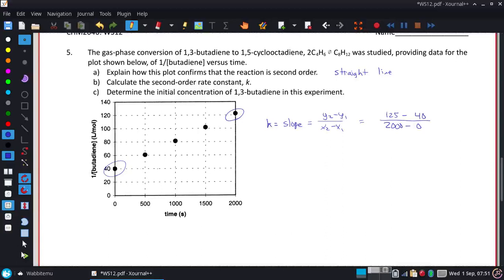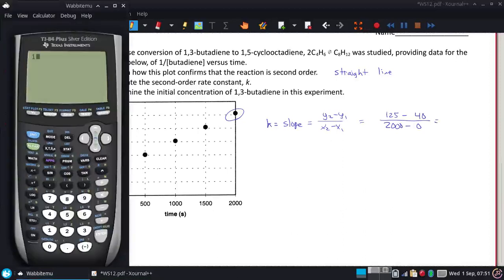And if we had the data to make that graph, we would have had the data to actually do a real trend line and get this exact. But this is going to be close enough for what we're doing. So 125 minus 40 divided by 2,000. We get that. And that is our k, our rate constant.